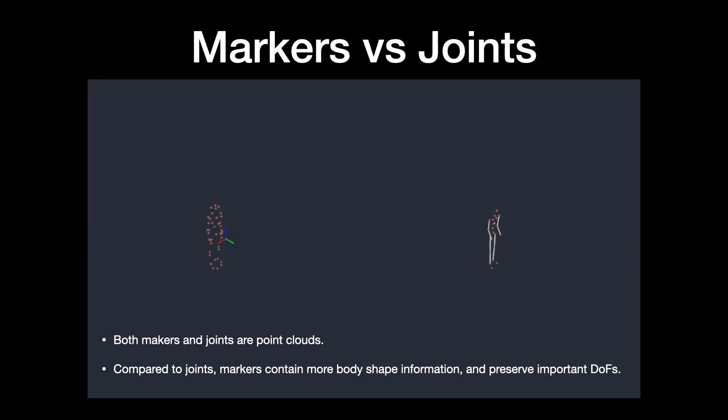We make a fundamental observation. 3D joints in Euclidean space can be viewed as a sparse point cloud. Thus, current methods that predict the joints are actually point cloud predictors. Here, we replace one type of point cloud with another.